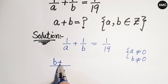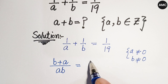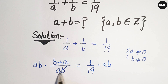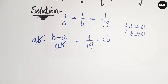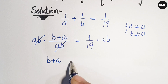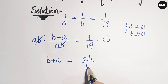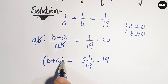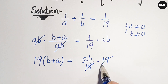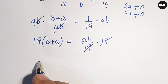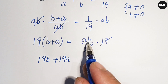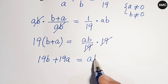We have b plus a over a times b equal to 1 over 19. Now multiplying both sides by a times b, the a times b cancels, giving us b plus a equal to a times b over 19. Then multiplying both sides by 19, the 19 cancels, and we get 19b plus 19a equal to a times b.